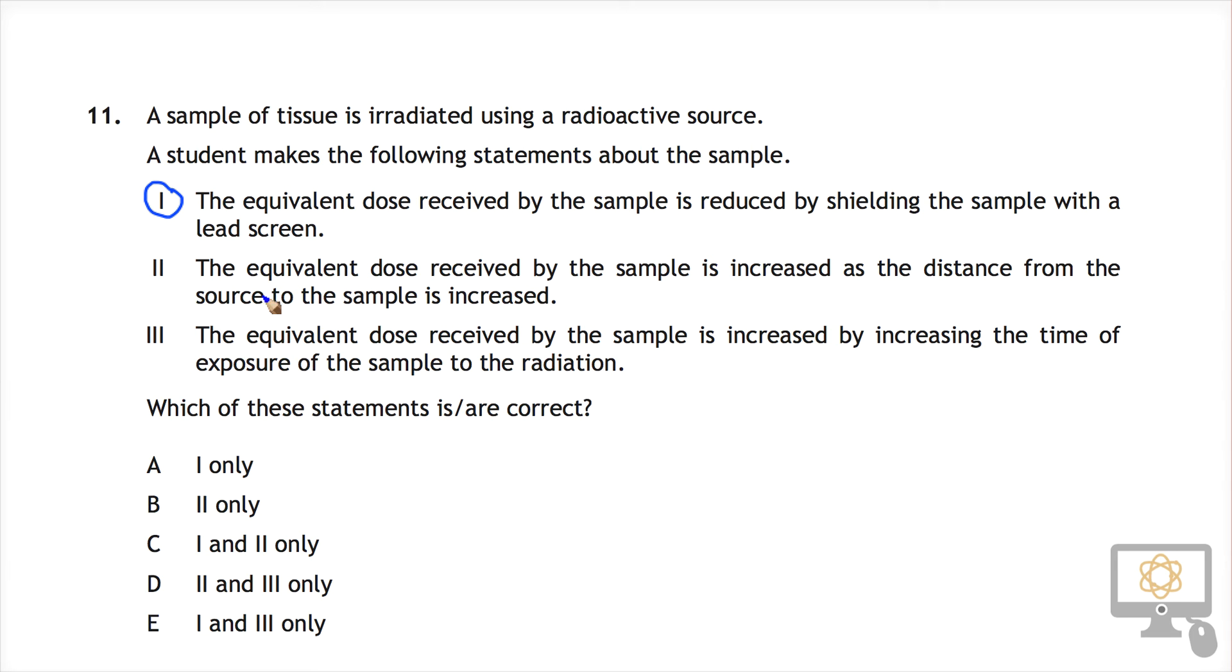Moving on to the next one. It says that the equivalent dose received by the sample is increased as the distance from the source to the sample is increased. The distance from the source to the sample is increased, and that would mean that the equivalent dose received would decrease. This is not correct. As you get farther away from the source, you get less radiation. So that one is wrong.